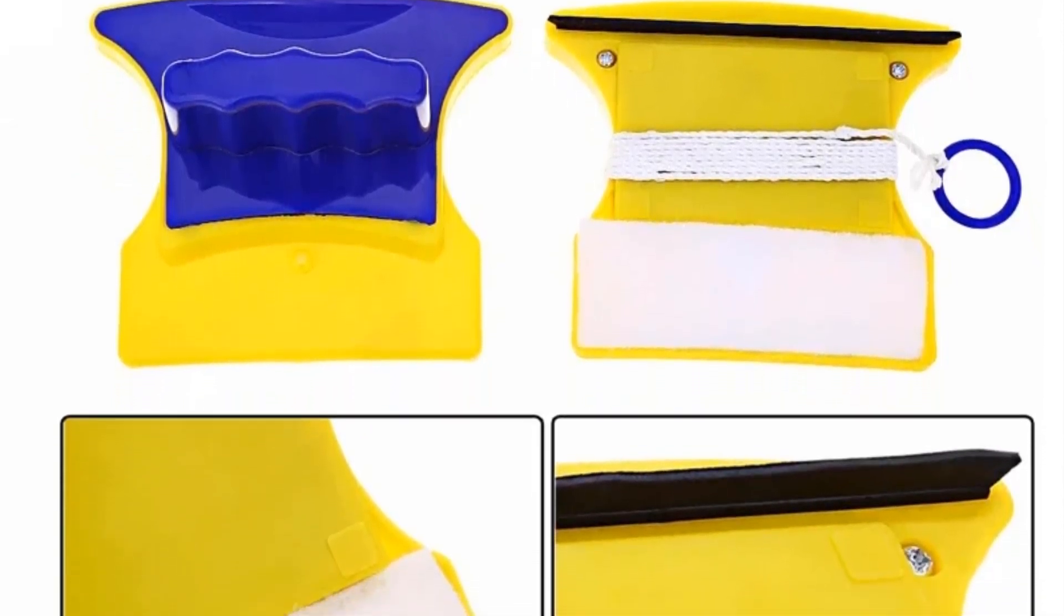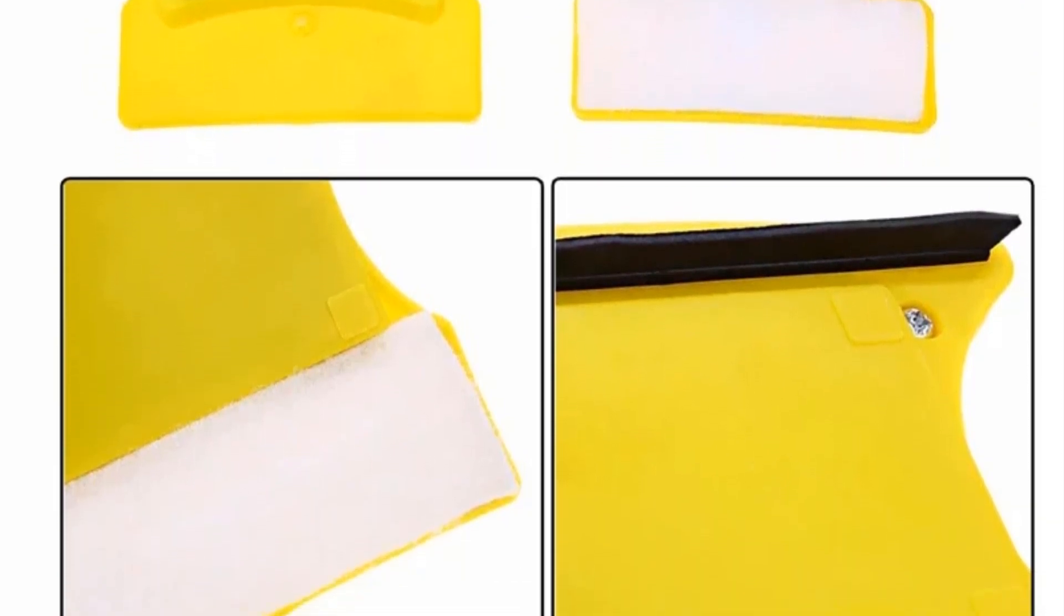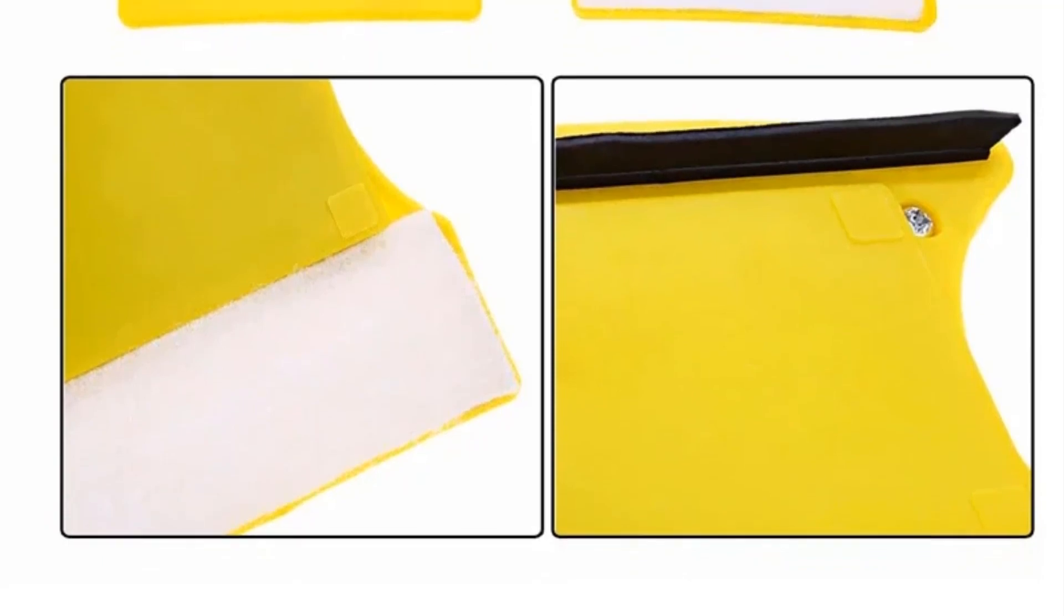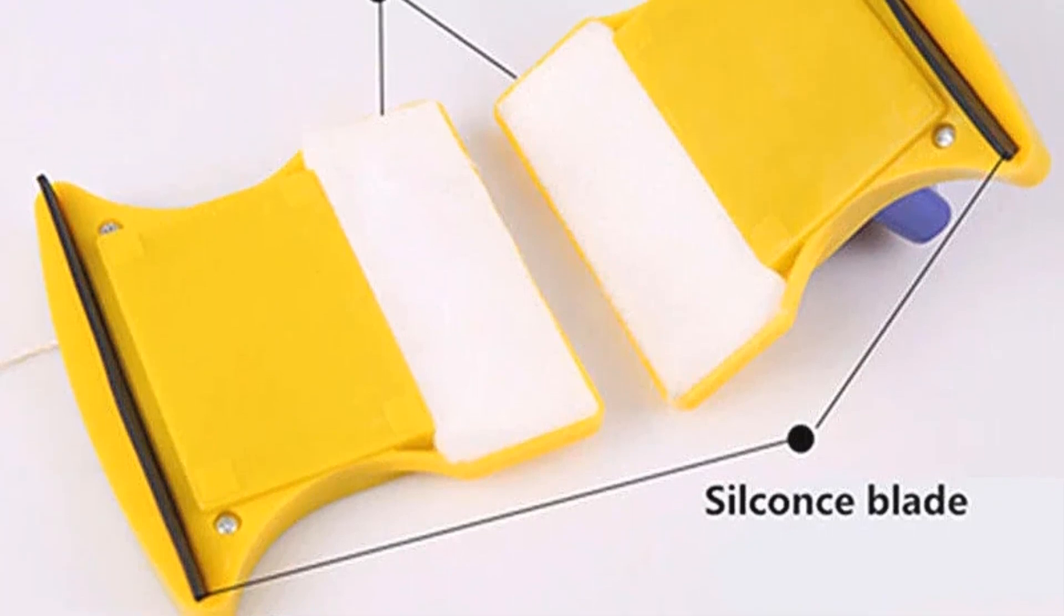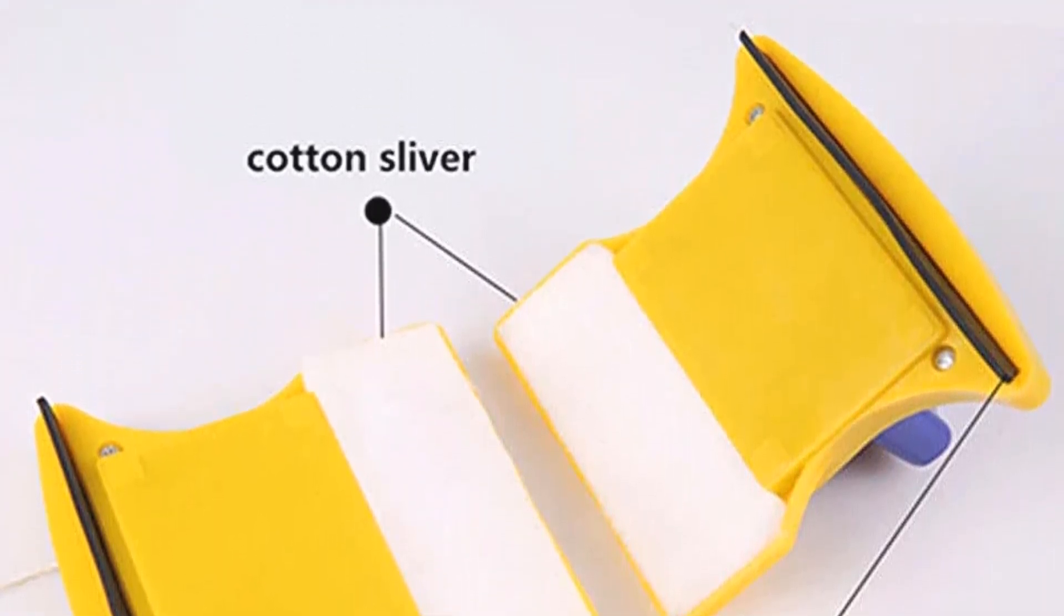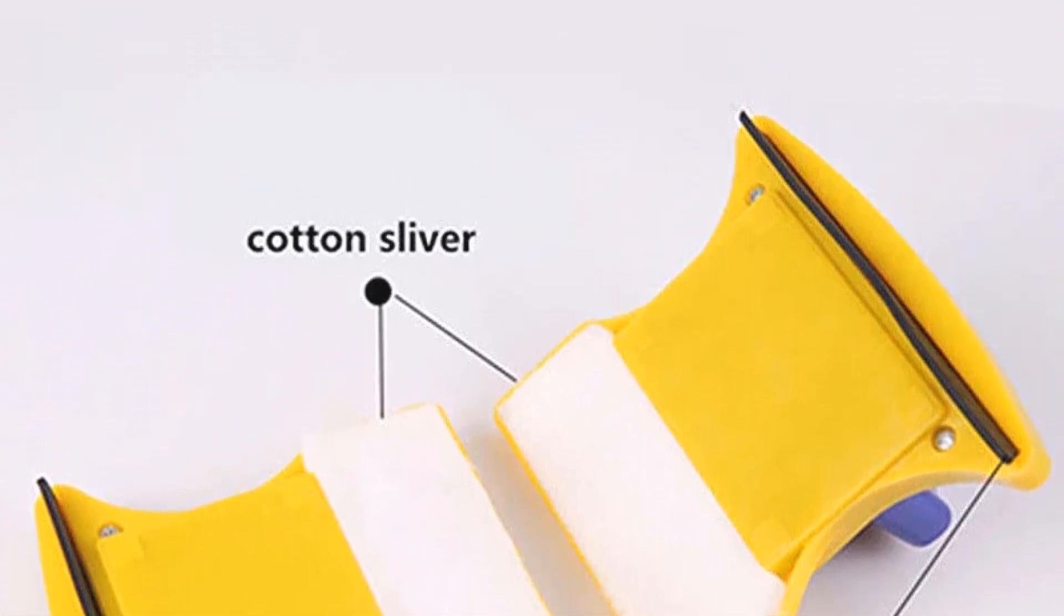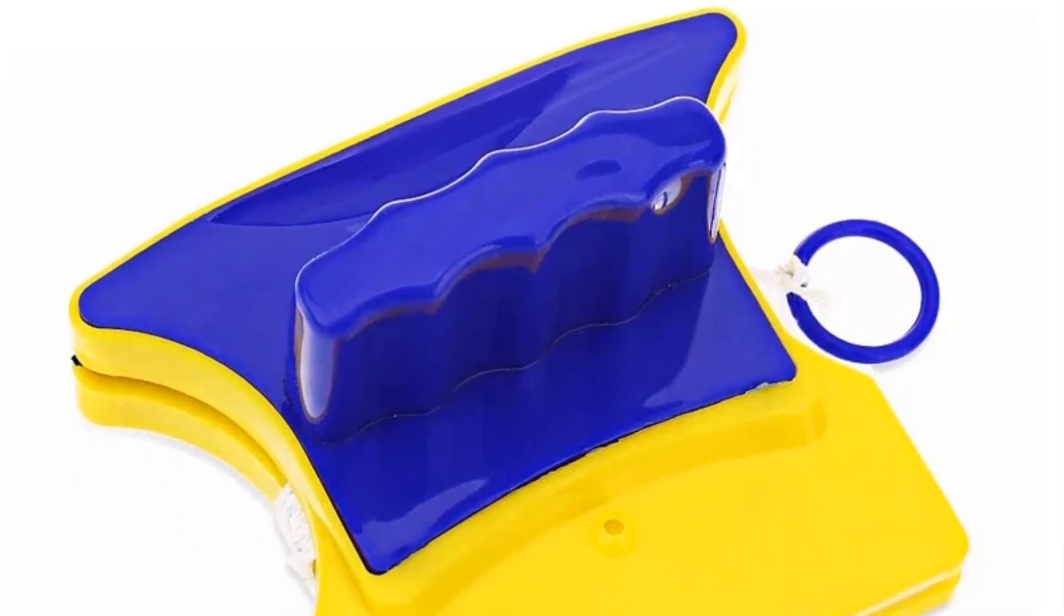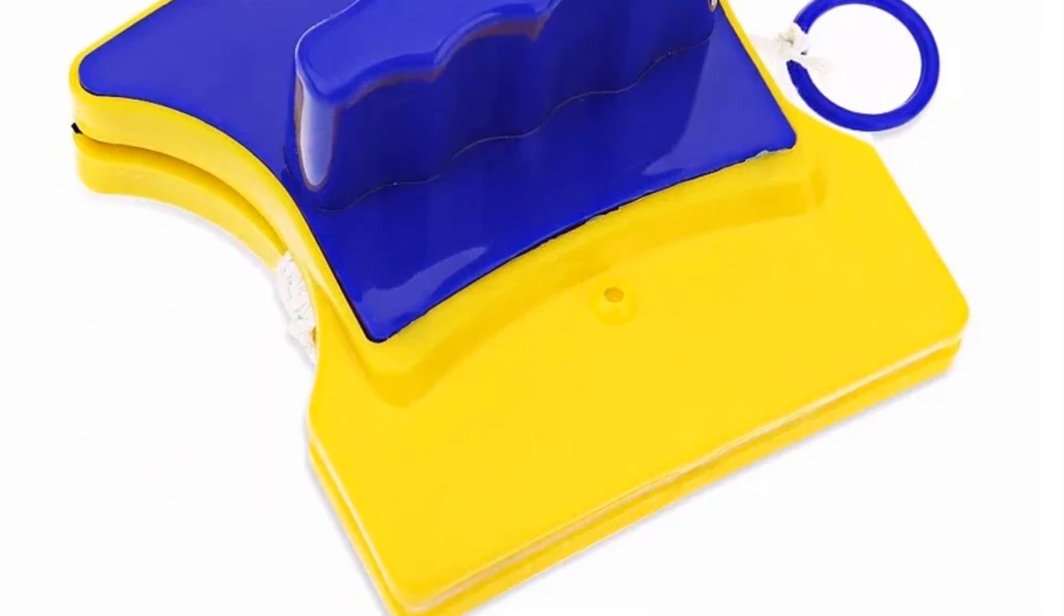The magnetic force ensures that the two pieces stick together through the window, enabling users to move the cleaner from the inside while simultaneously cleaning the outer surface. Equipped with a scraper, the Magnetic Window Cleaner effectively removes dirt, grime, and other impurities from the glass surface. This dual action approach streamlines the window cleaning process, eliminating the need for users to access the exterior of their homes or buildings to clean windows.